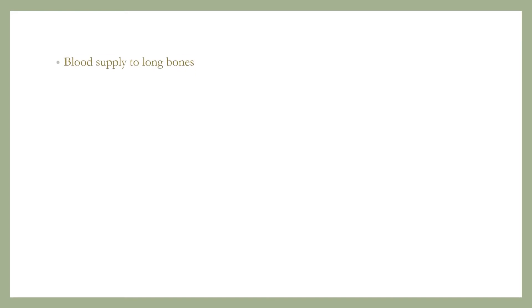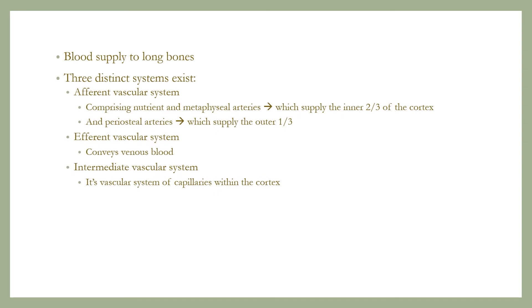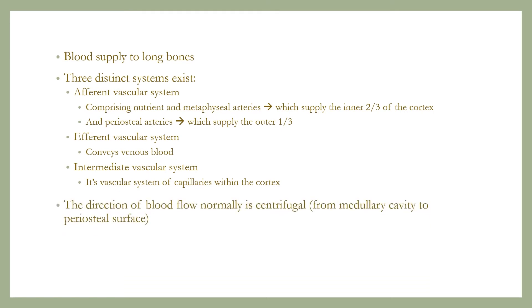Blood supply to long bones: three distinct systems exist. The afferent vascular system, comprised of nutrient and metaphyseal arteries, supplies the inner two-thirds of the cortex; and periosteal arteries supply the outer one-third. The efferent vascular system conveys venous blood. The intermediate system consists of a system of capillaries within the cortex. The direction of blood flow normally is centrifugal, from the medullary cavity to the periosteal surface.